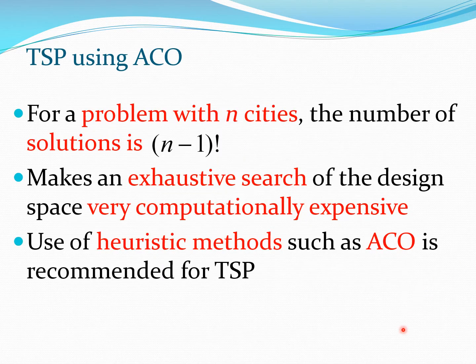Let us look at some aspects of TSP before looking at ant colony optimization for solving it. For a problem with n cities, the number of solutions is n minus 1 factorial. One approach is to search all possible combinations in the design space — all possible paths — and find the path with the least distance. However, this would be a very computationally expensive exercise especially if the number of cities is large. Heuristic methods such as those based on ant colony optimization are therefore recommended for the traveling salesman problem.